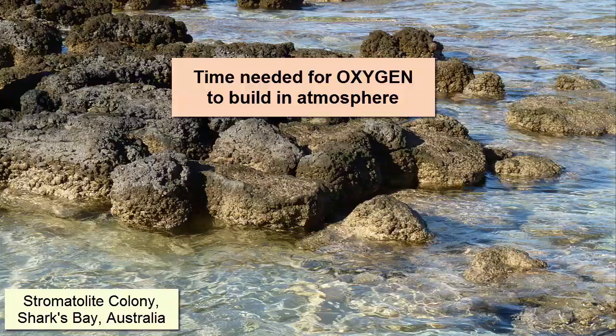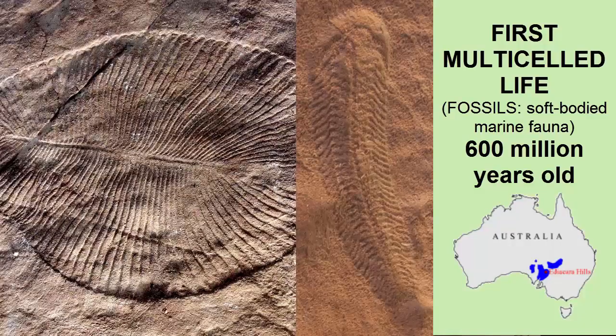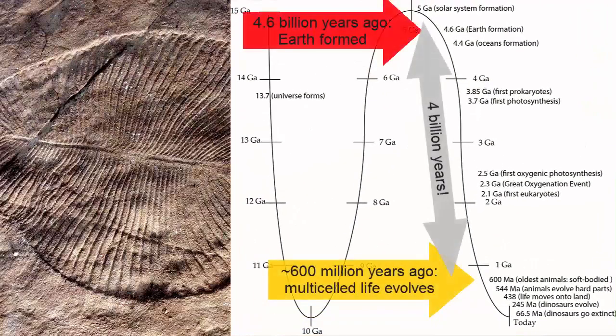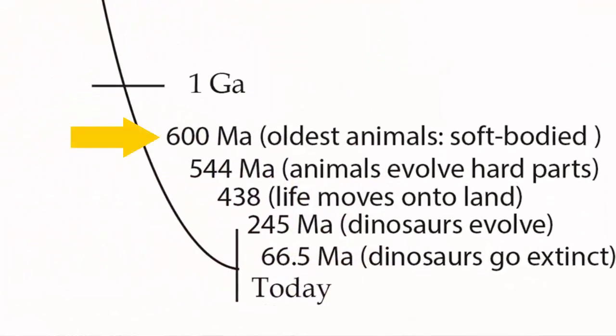The oldest evidence of multi-celled life was discovered in fossils of soft-bodied marine organisms in 600 million year old rocks in the Ediacaran hills of Australia. That's 4 billion years after Earth formed, and in the last one-ninth of Earth's history.